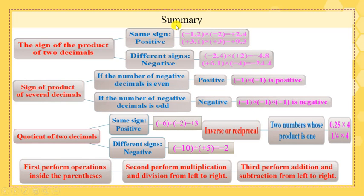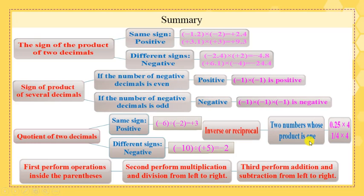Summary for the whole chapter: sign of the product of two decimals — same sign gives positive, different signs gives negative. Sign of the product of several decimals — even number of negatives gives positive, odd number gives negative. Quotient of two decimals — same sign gives positive, different signs gives negative. Inverse or reciprocal: two numbers whose product is one are inverses. For expressions: first perform operations in parentheses, then multiplication and division left to right, then addition and subtraction left to right.